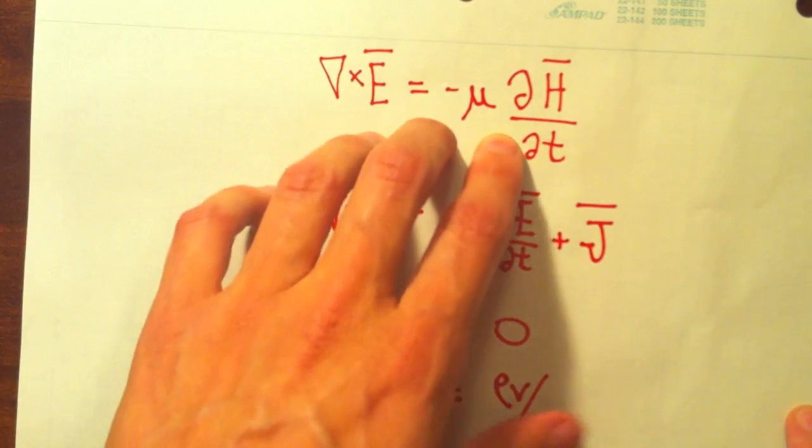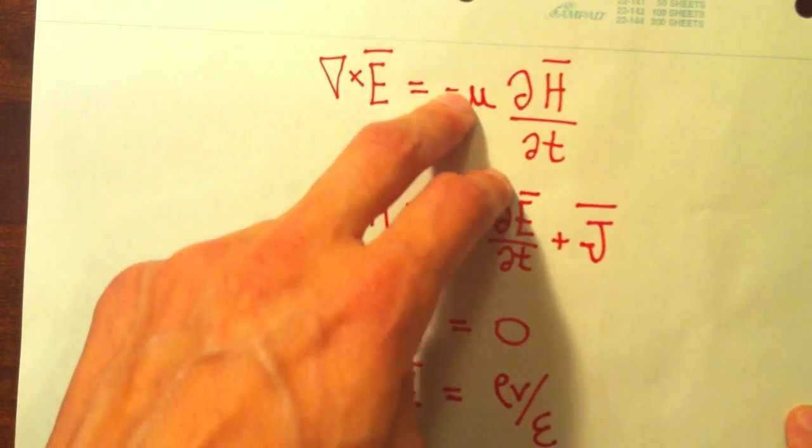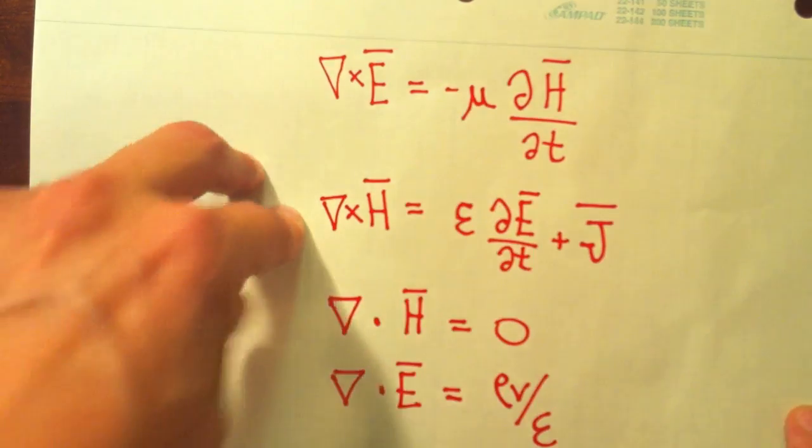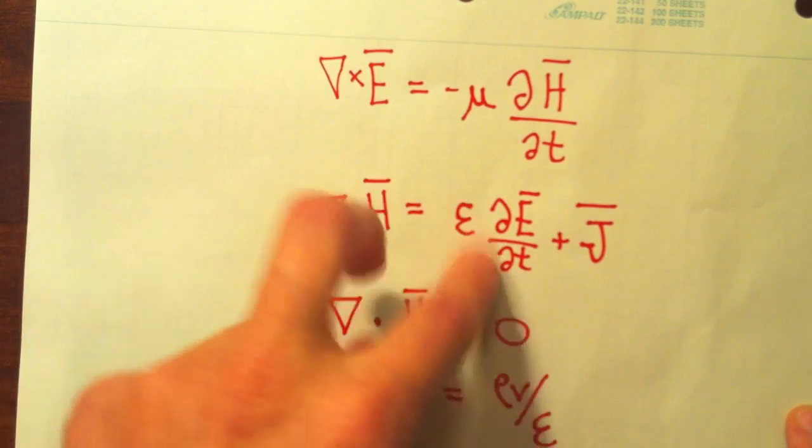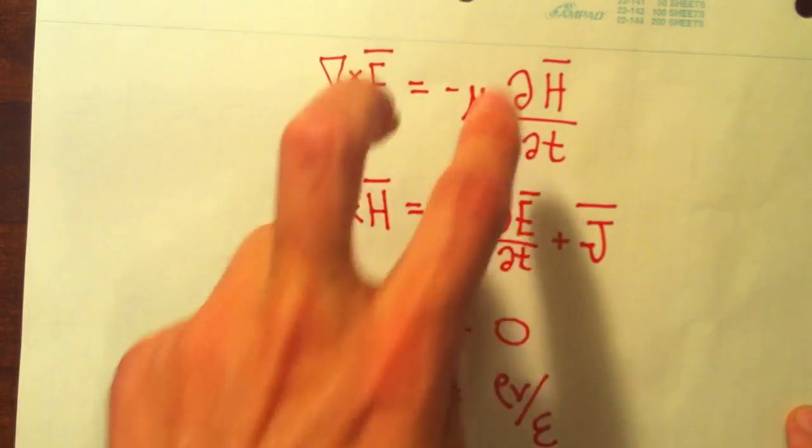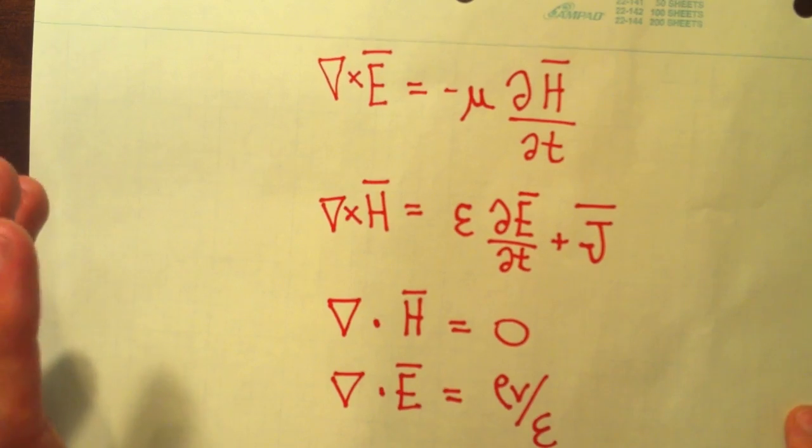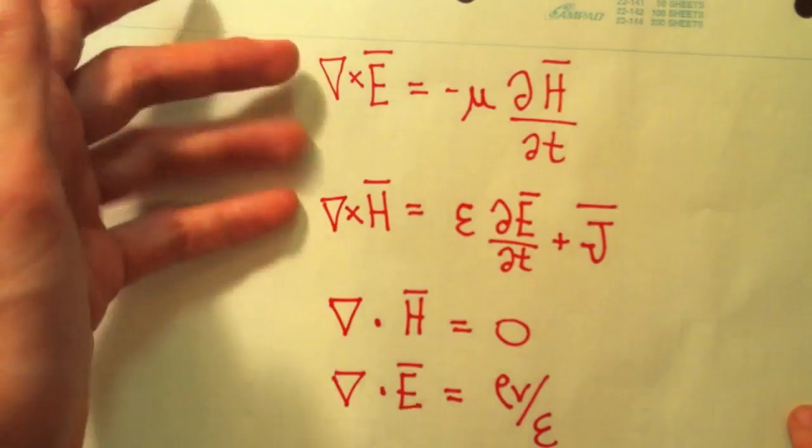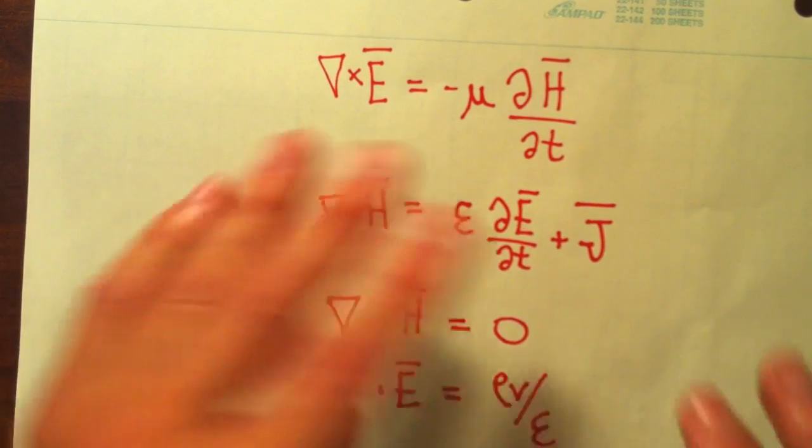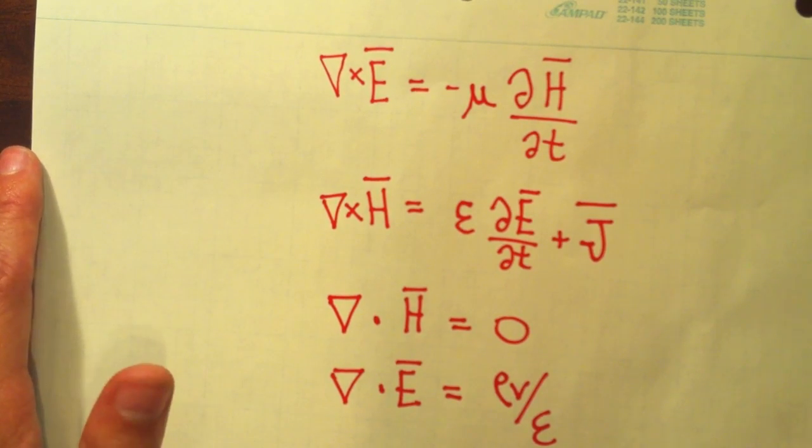This is actually what governs all of radiation and propagation, is a spatially varying E gives rise to a time varying H, and then plane waves have to have both a time varying and a spatially varying component. It's this looping around that is actually what causes radiation. It's the interaction of these two equations, the E field interacting, wrapping around the H field, that is responsible for all of radiation.